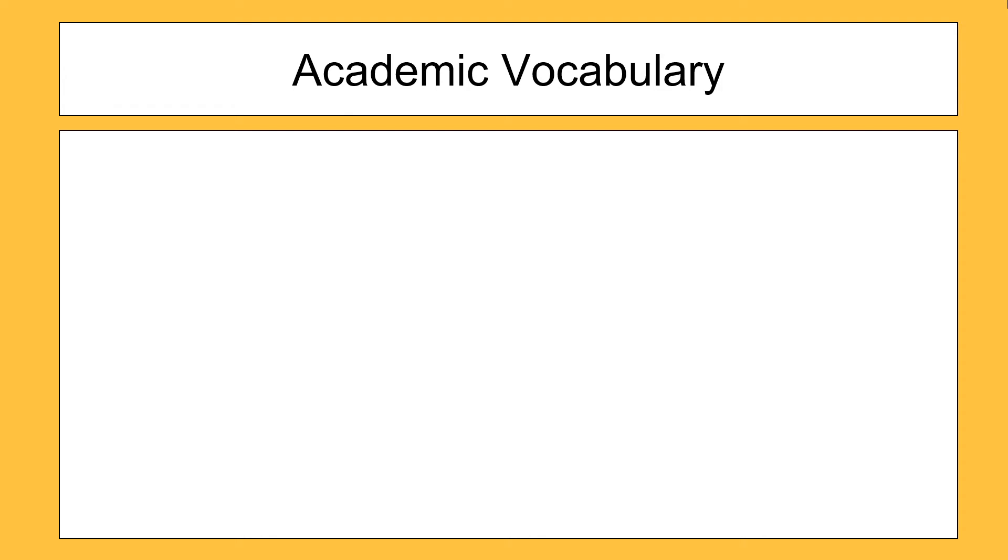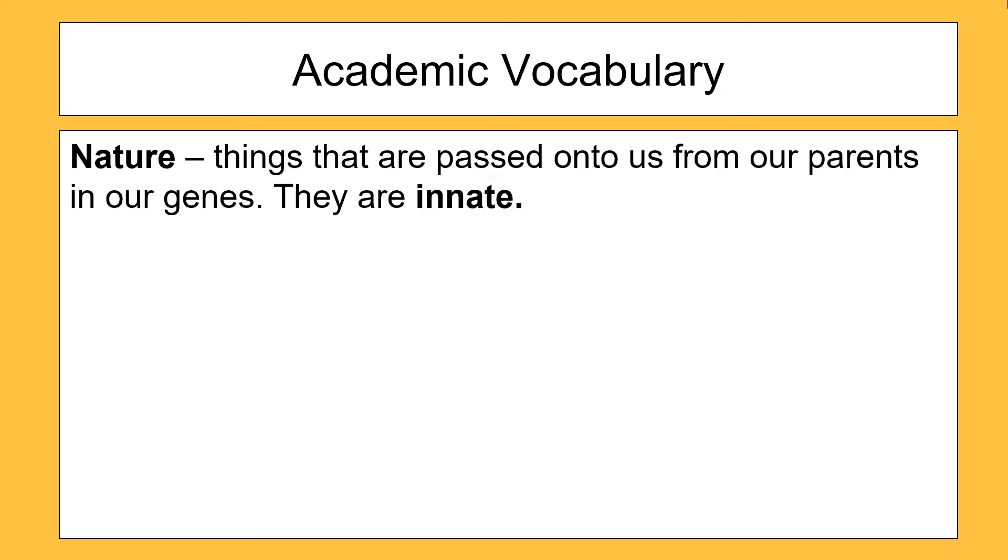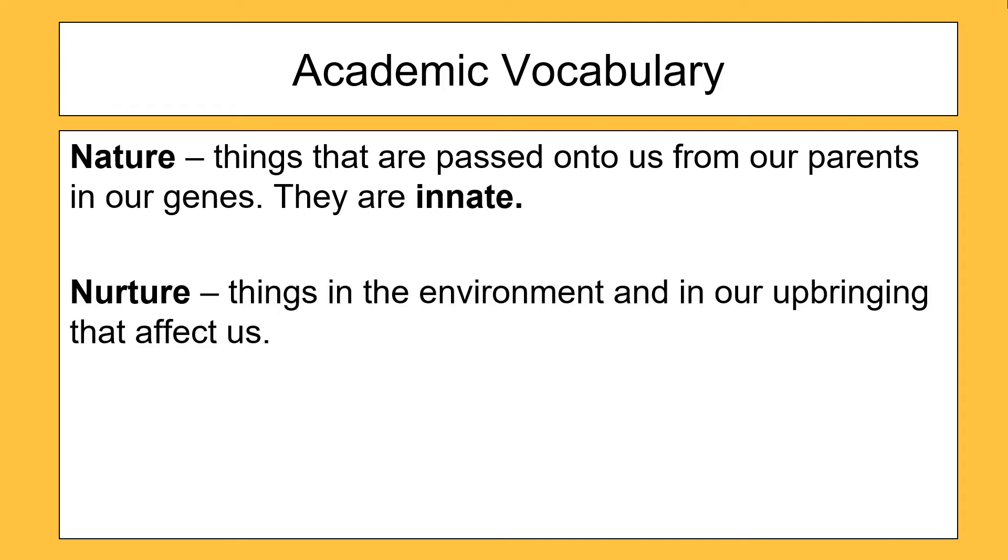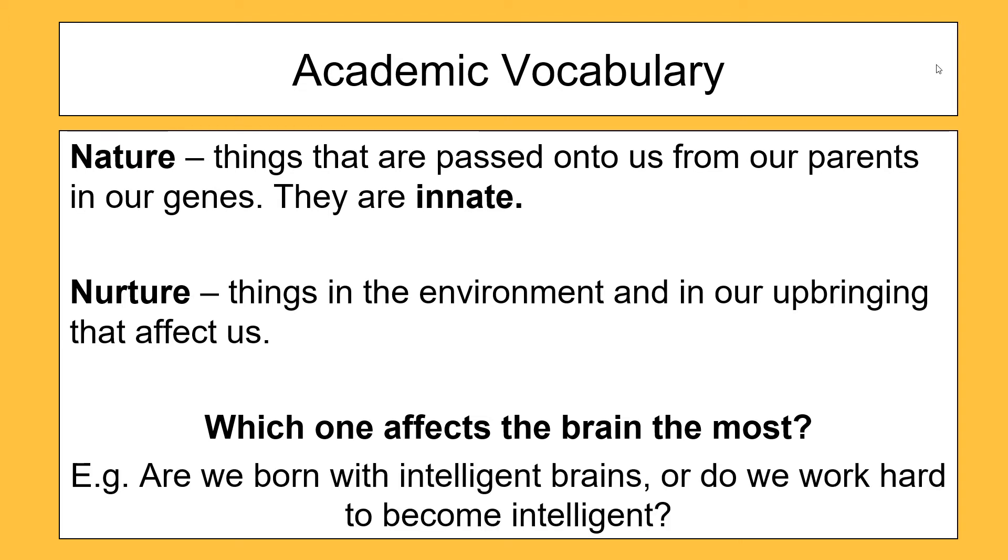The next thing you need to know about early brain development is the difference between nature and nurture. Nature is things that are passed on to us from our parents in our genes, things that are innate. And nurture relates to things in the environment and in our upbringing that affect us. In psychology and all sciences, there is a large debate between nature and nurture. And that debate is which one impacts us the most, which one makes us who we are. Are we born a certain way or do we develop a certain way based on our upbringing and the things that happen in our environment? Well, this part of the topic is no different. We need to know which one affects the brain the most.